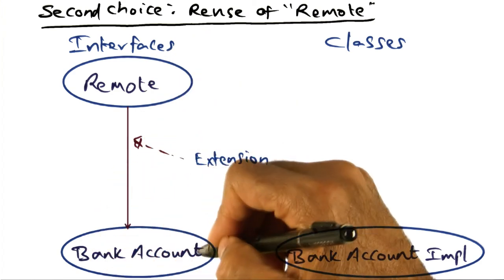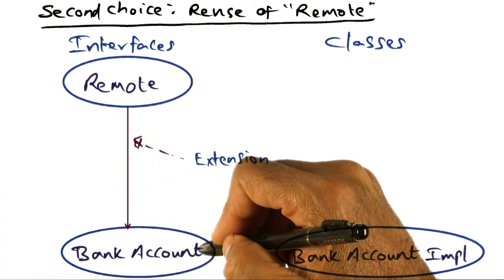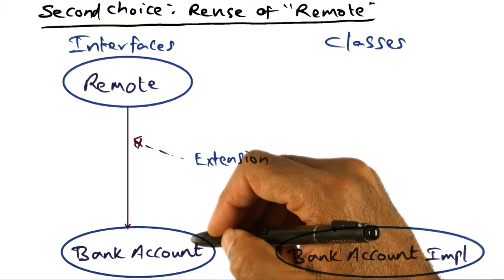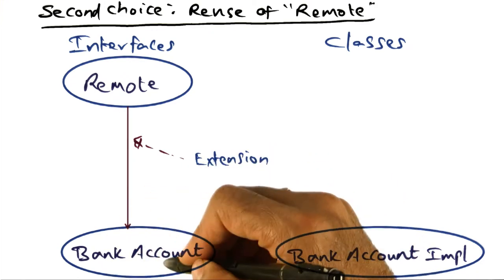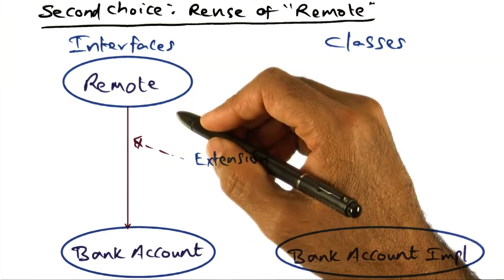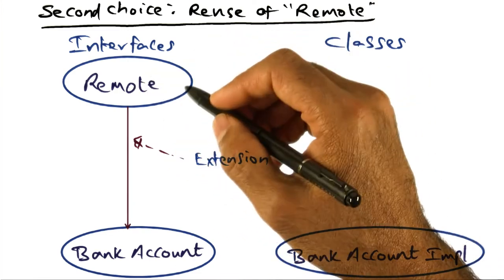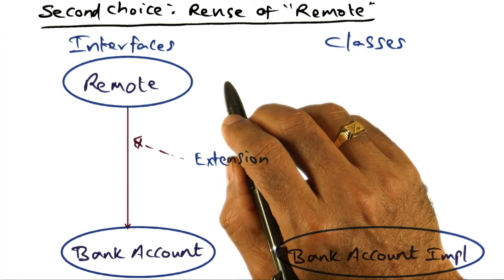So that this bank account interface now becomes available for any client that wants to access that object. And the reason this interface becomes available to the client is because you're extending this remote interface class that's available in the distributed object model of Java.